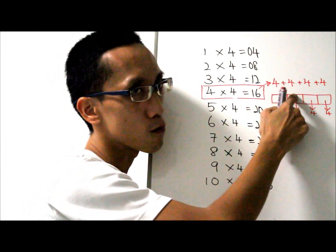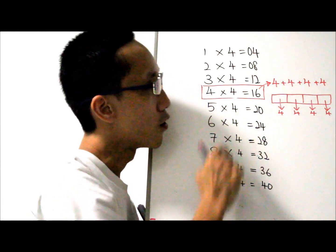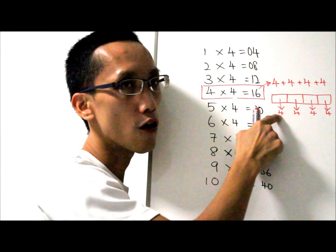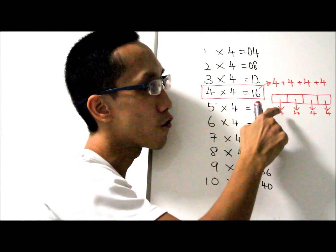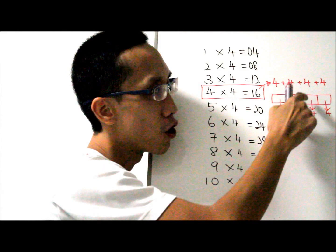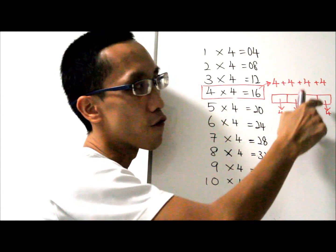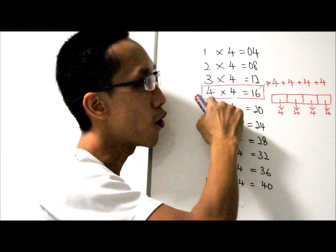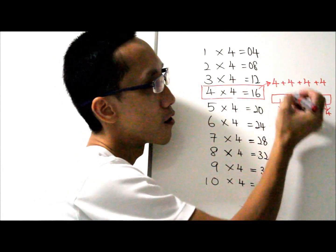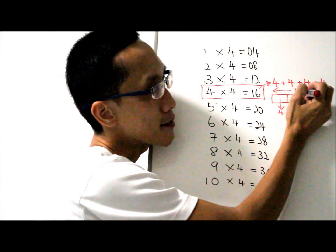There are 1, 2, 3, 4 parts. And each part will have 4. So 1 four, 2 fours, 3 fours, 4 fours — 4 times 4 equals 16. So from here to here will be 16.